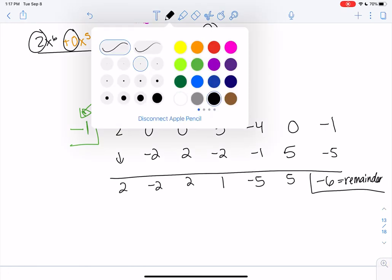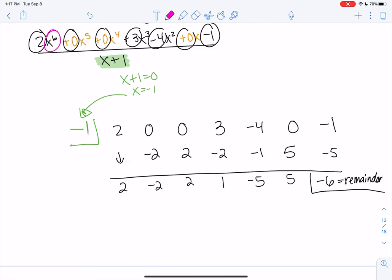All right, and then let's see. Since this was x to the 6th, this is now x to the 5th. And everything is just 1 degree less. And then the last one is a constant.